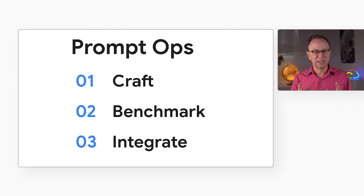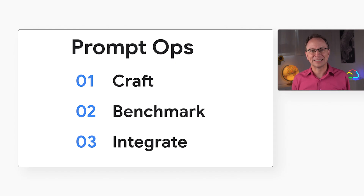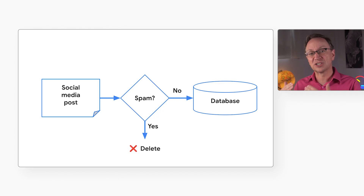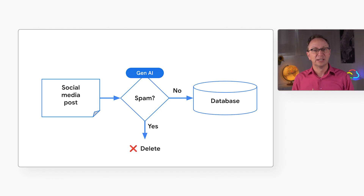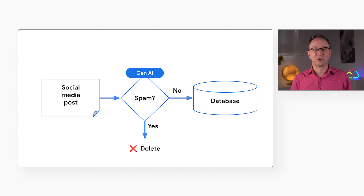In this video I'll show you how to use Google's tools to engineer and improve your prompts with a clear PromptOps framework — from initial crafting, to benchmarking, to automated CI/CD testing. For our use case, we'll filter spam in a social media app. Instead of the old slow way of training our own classifiers, we'll use a single GenAI prompt that requires no training, and it can even explain its reasoning.